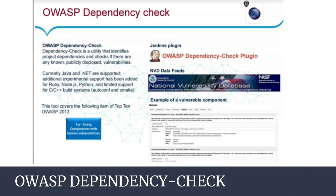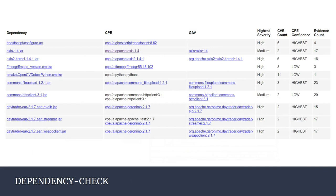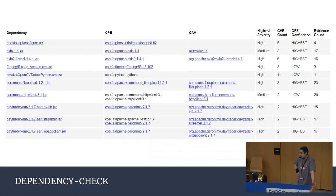For detecting dependencies in our projects, we have the OWASP Dependency Check project, which identifies project dependencies and checks if there are any known vulnerabilities. It provides plugins for Jenkins and Gradle. This tool provides a report where for each dependency you can see the vulnerability level and related information, including the vulnerable version.